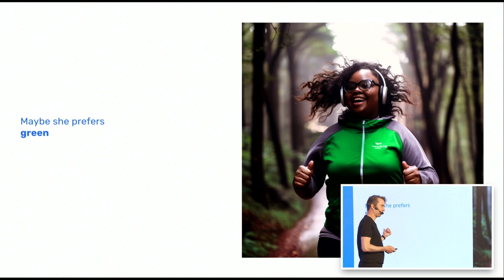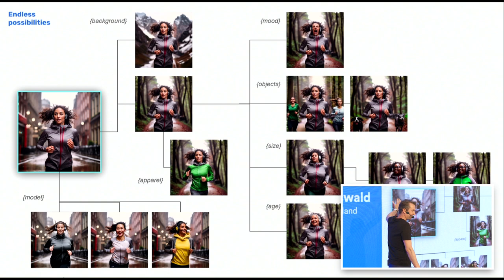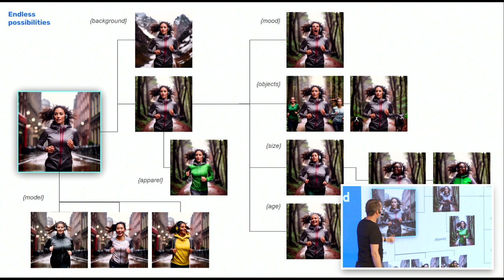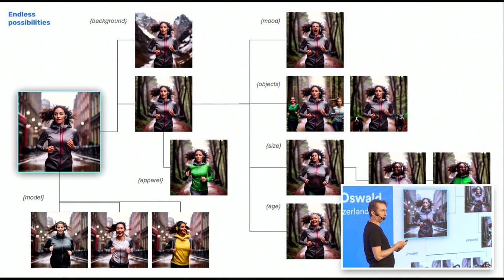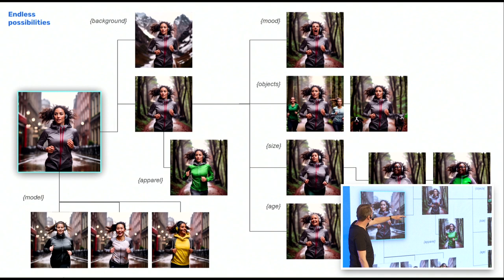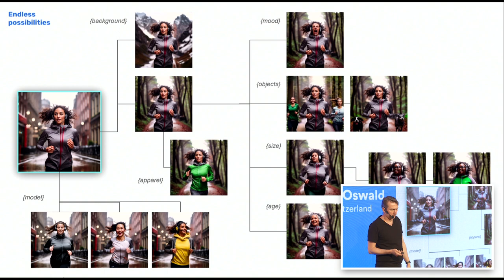Maybe she likes to run with her friends. Maybe she's angry while running because her friends are far away. Maybe she's an older woman, a different person, maybe she prefers green apparel instead of grey. Do we have any marketing people here? They will love that. Because what you can now do is take one object — a hero image — and create instances of the same object with variations. You can combine these variants, and it's not really an effort anymore if you just build some logical trees. Then you put it back to an analytics colleague who feeds back which visual performed better in which region, in what environment, at what time.